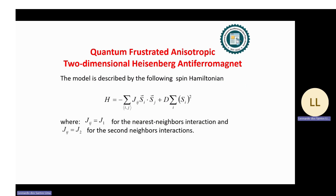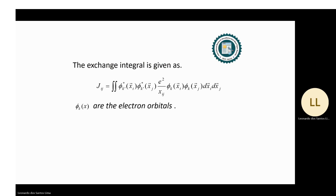We consider a quantum frustrated anisotropic two-dimensional Heisenberg antiferromagnet. The model is described by the following spin Hamiltonian, where J is the nearest-neighbor interaction and J2 is the next-nearest-neighbor interaction. The exchange integral J_ig is given by an expression where phi_x are the electron orbitals.